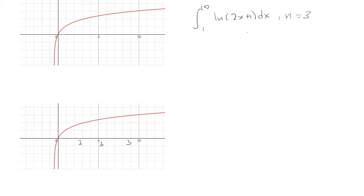So that means n is 3. For delta x, we have b minus a over n, which is 10 minus 1 over 3, and that's going to be 3. So that means that each rectangle is going to have width 3.